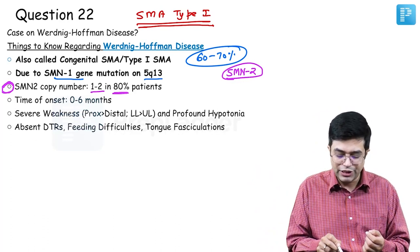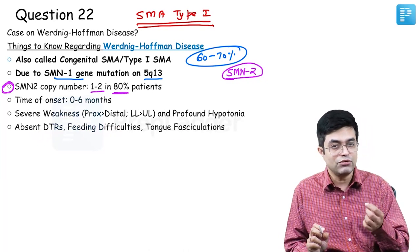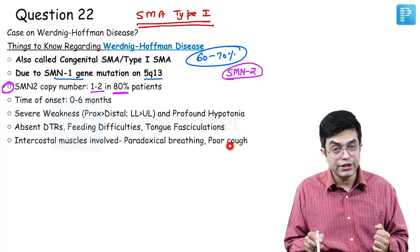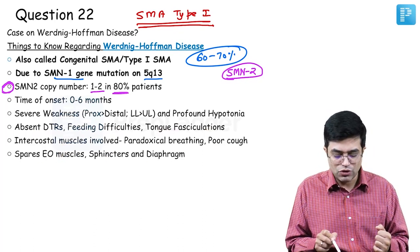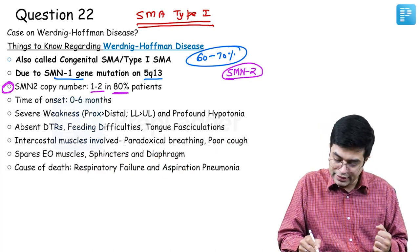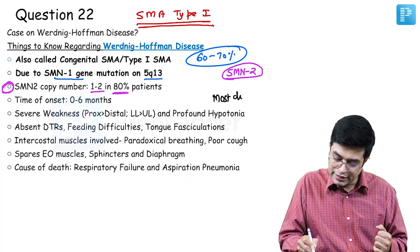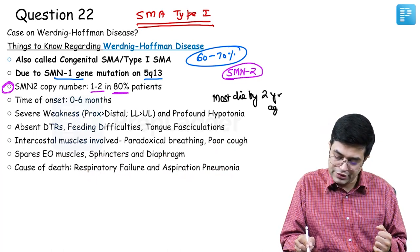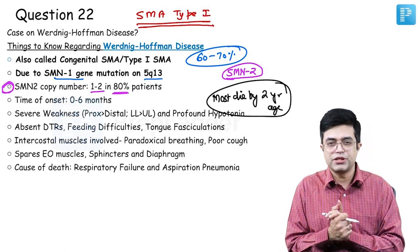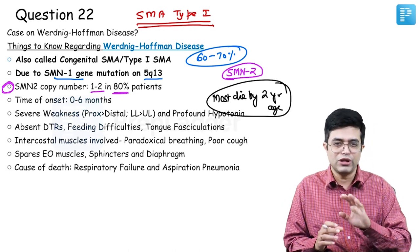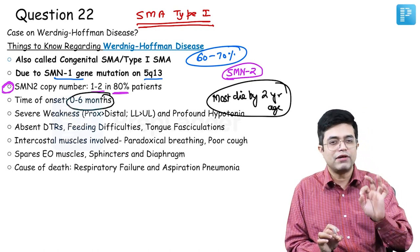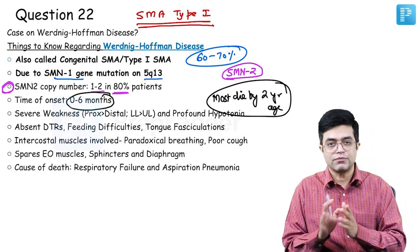SMA type 1 spares extraocular muscles, sphincters, and diaphragm. Intercostal muscle involvement leads to paradoxical breathing and poor cough. Patients with multiple copies of SMN2 have relatively more functional protein and are protected — they will have other types of SMA like type 2, 3, or 4. SMN2 copy number is very important. Diagnosis is based on clinical features: onset less than 6 months, progressive hypotonia, and the described features.